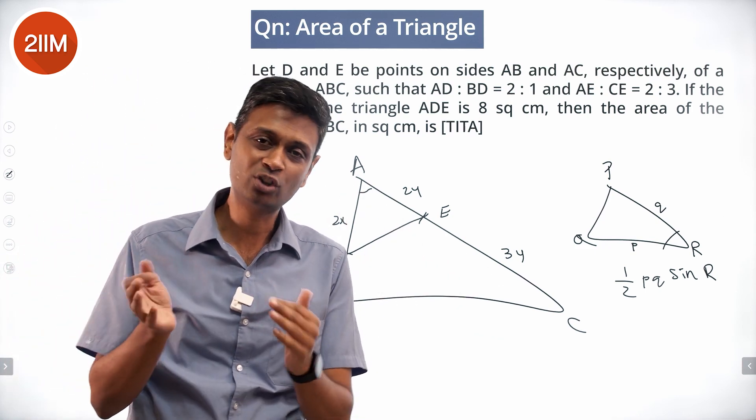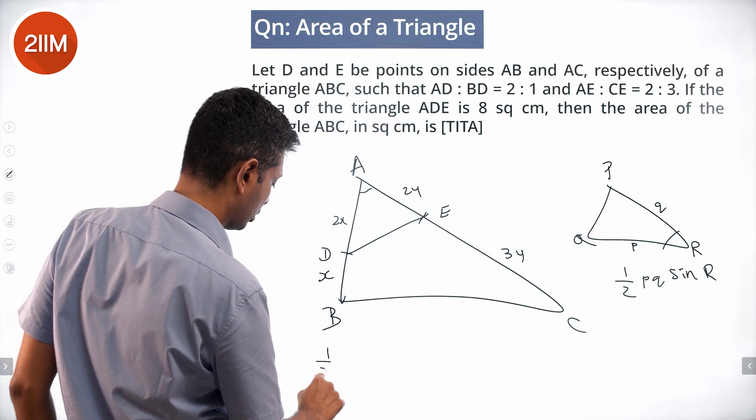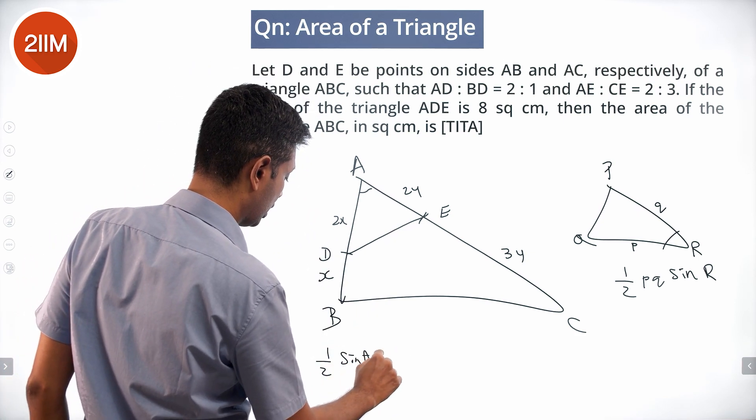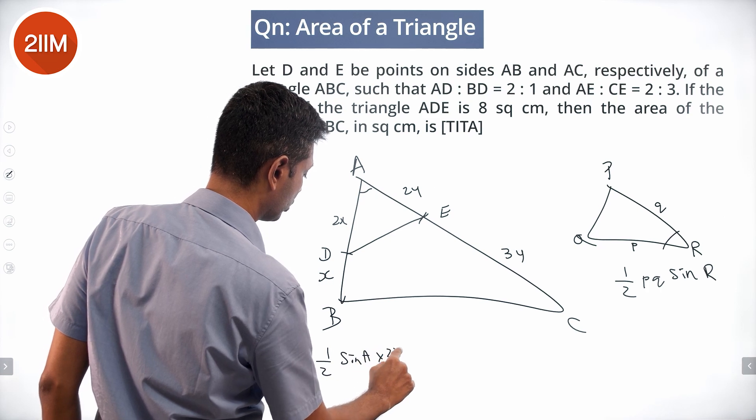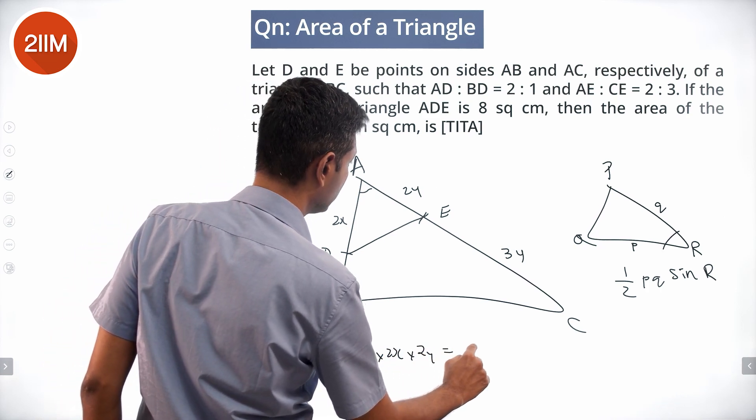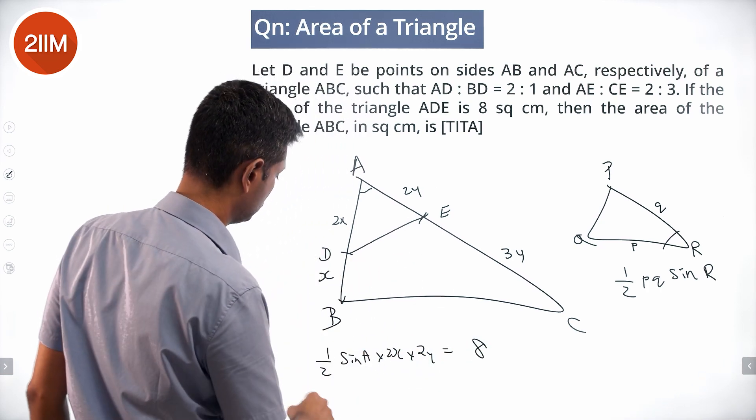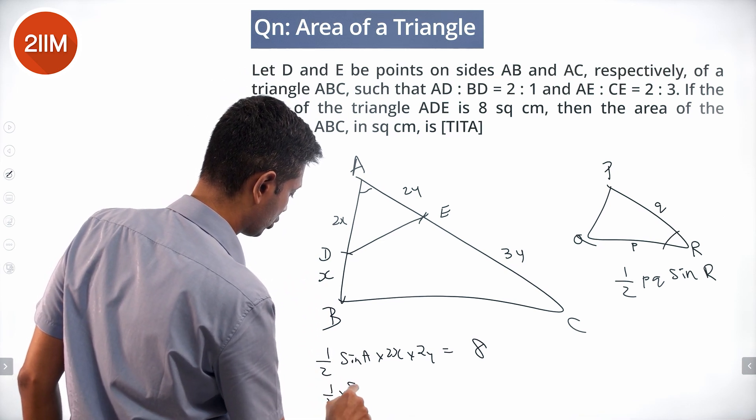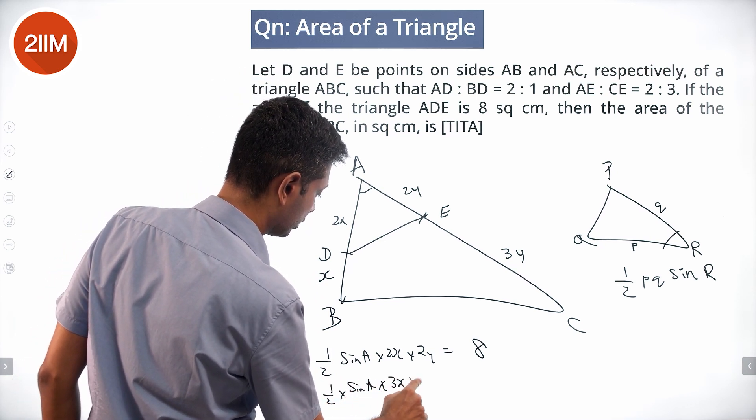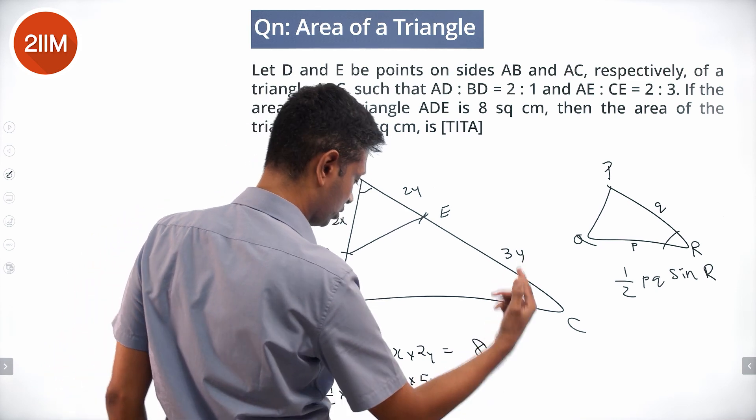Sine of angle A is common, or half into sine A into 2x into 2y is 8. Half into sine A into 3x into 5y. What is this going to be?